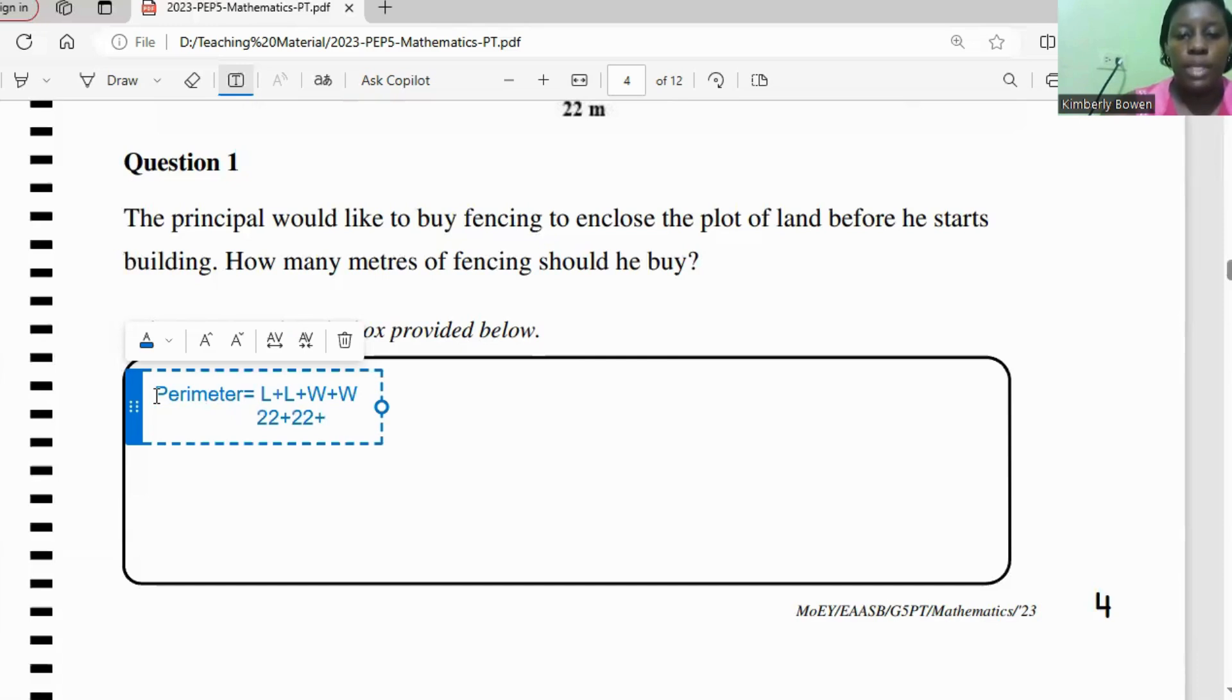That's 22 plus 22, this is the way I'm doing it, plus 18 plus 18. 22 plus 22 is 44, and 18 plus 18 is 36. So you can say 44 plus 36.